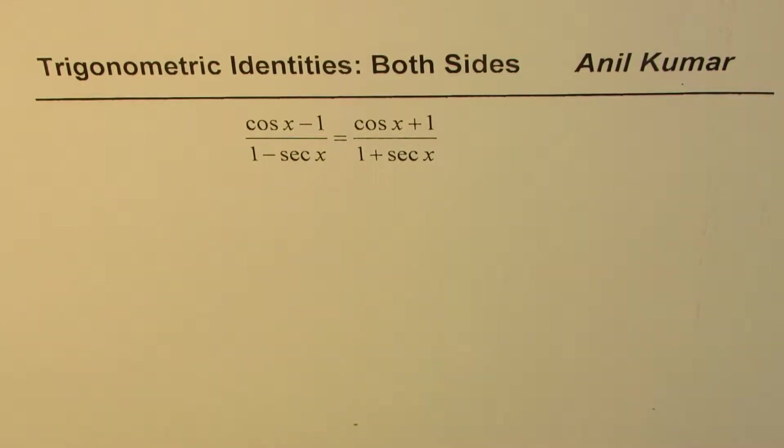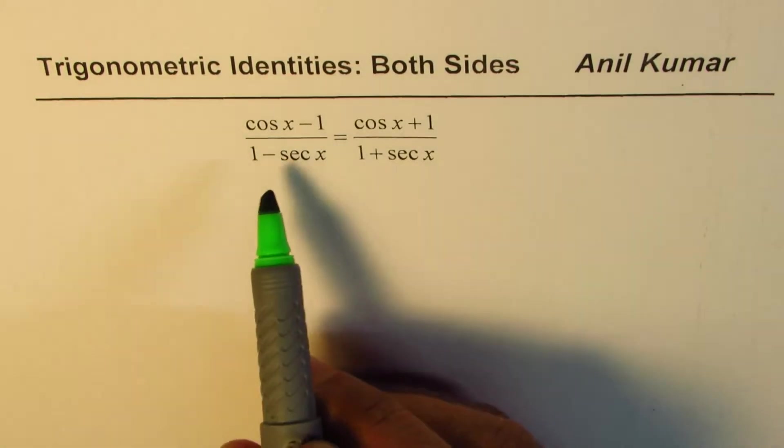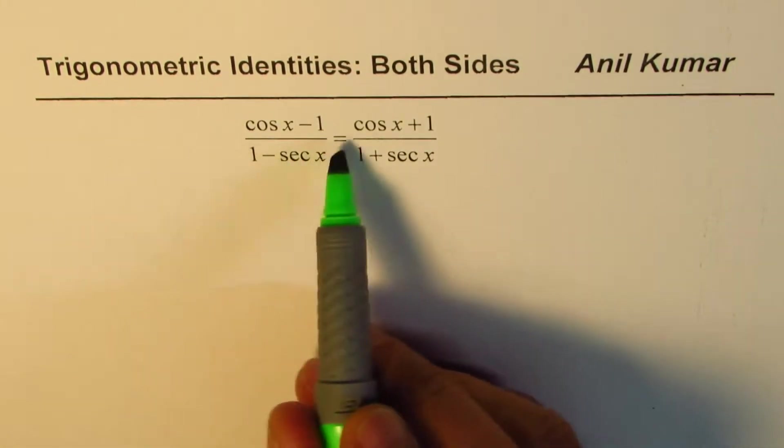I'm Anil Kumar, and in my set of videos on trigonometric identities, I have taken three examples in which I'll prefer to do both sides to prove the identity. This is one of those: (cos x - 1)/(1 - sec x) equals (cos x + 1)/(1 + sec x).